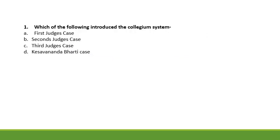The first question is: which of the following introduced the collegium system? Options are the First Judges Case, Second Judges Case, Third Judges Case, and Keshavnanda Bharati Case. The correct answer is the Second Judges Case.